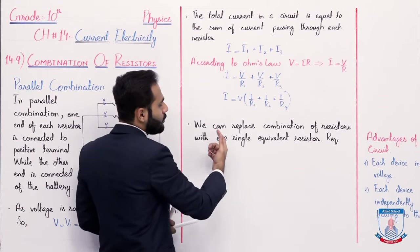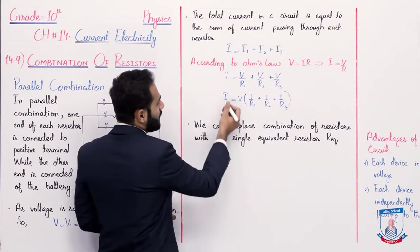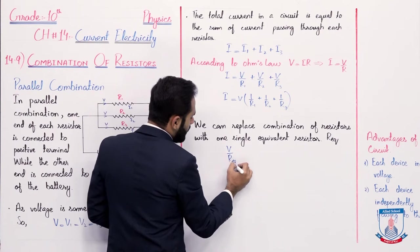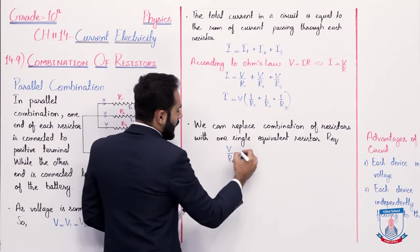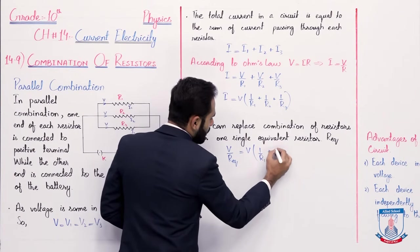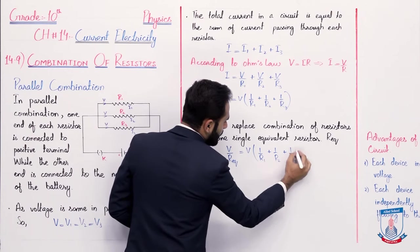So, applying Ohm's law, I is equal to V over R. So we put the formula, that is, V over R equivalent. And this equals V multiplied by 1 over R1 plus 1 over R2 plus 1 over R3.